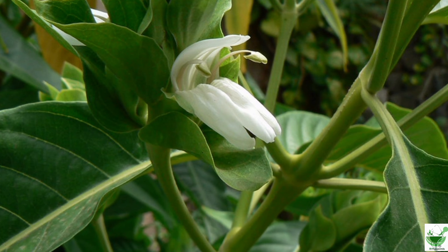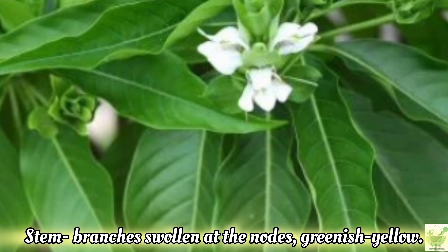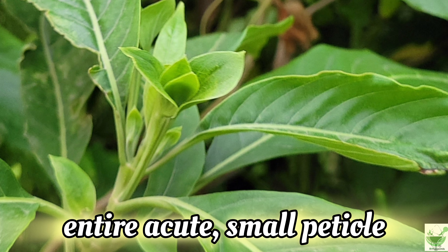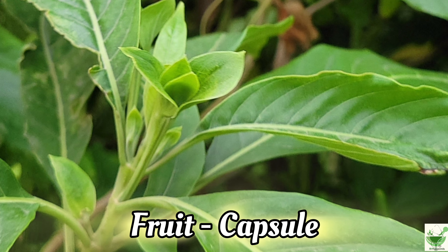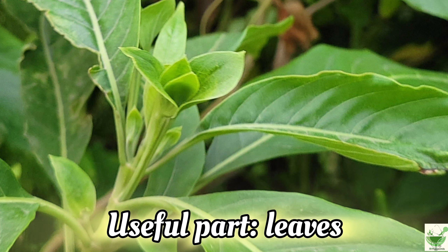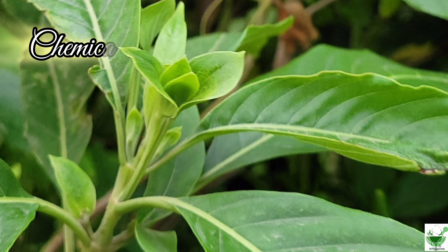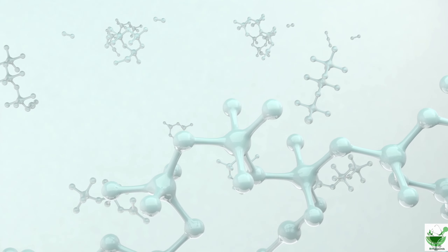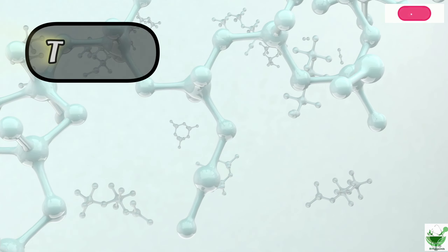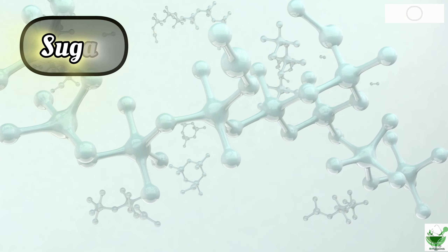Morphology: Vasaka is a perennial undershrub with a taproot system and branched stem. The branches are swollen at the nodes with a greenish-yellow color. The leaves are opposite, lanceolate, entire, acute, with a small petiole. The fruit is a capsule, and the useful part is the leaves. Chemical constituents include alkaloids, tannins, flavonoids, terpenes, sugars, and glucosides.